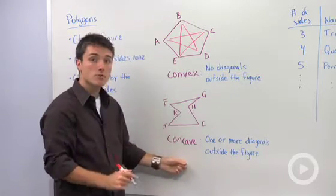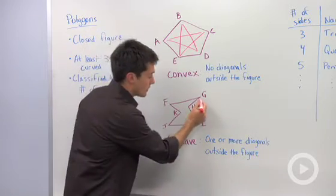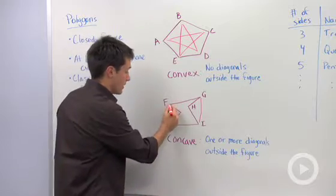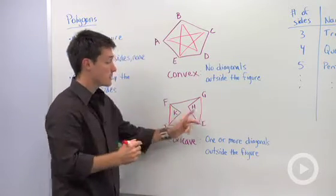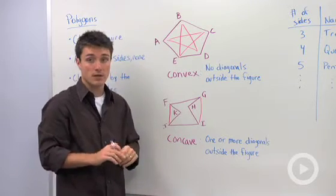To be concave, you need at least one diagonal that is outside of your polygon. So here I could draw in a diagonal that is not within this polygon. And it just so happens that we have two in this polygon, but that you only need one to be considered concave.